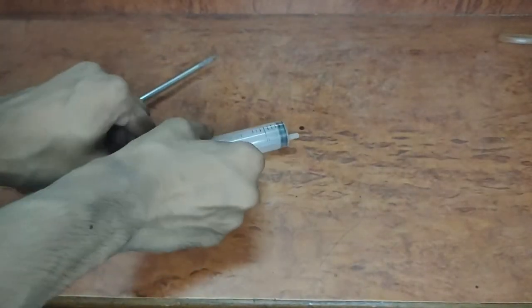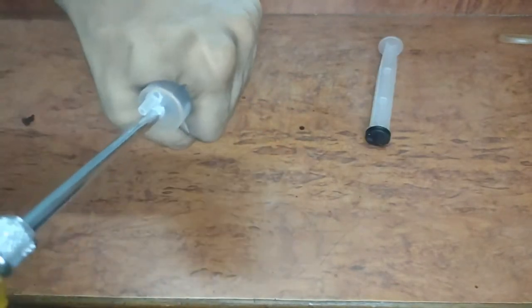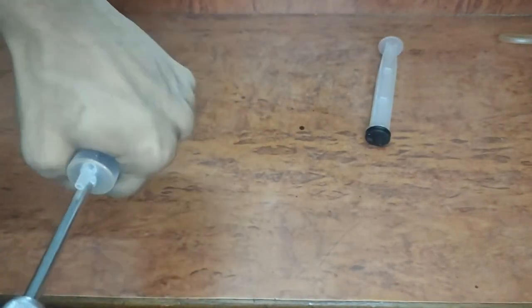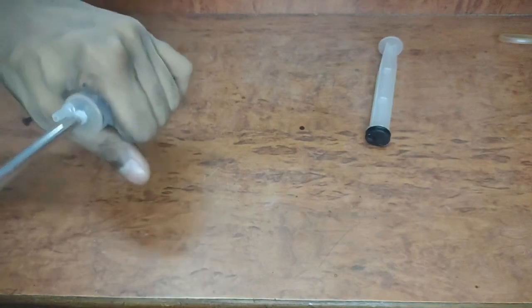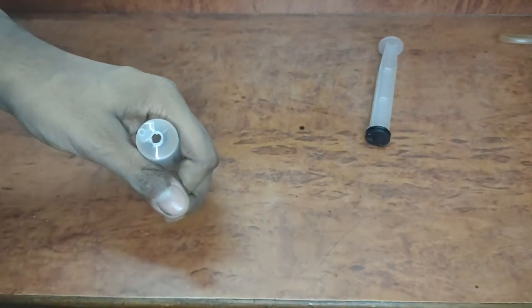Now I took a 25 ml syringe, took out its plunger, and using a poker, I made a hole in the front of the syringe as well as the side.